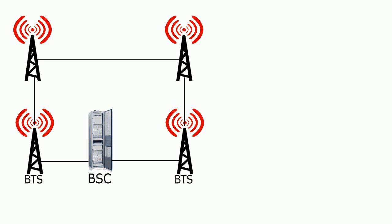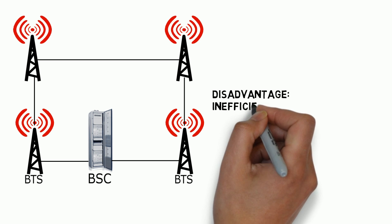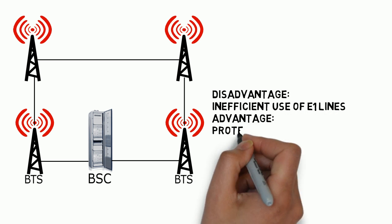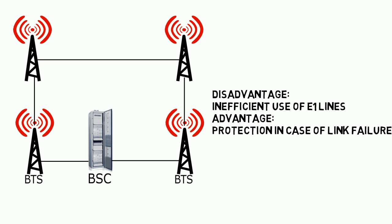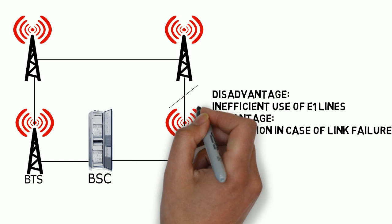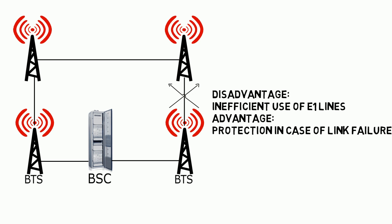Now we come to the ring configuration. Here, the BSC and the BTSs are connected in serial but they form a ring. One disadvantage of this scheme is that the E1 channels are not used very efficiently, so the required number of E1s increases — because you can connect to a BTS from two different directions, from the right and from the left, increasing line cost. However, one major advantage is that if there is a break in a connection, the BTS is still connected to the network and traffic can be switched to the alternate path.